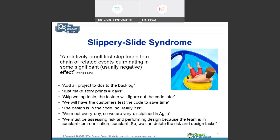Another example is skipping writing test cases, assuming the testers will figure out the code later. This is tempting at the beginning because there may be no time for test case writing, or it seems difficult. But if a team pursues that line of thinking over time, the testers and QA people end up with no idea what the code is trying to do. A lot of time is then spent trying to test the code without any understanding of the intended end result.